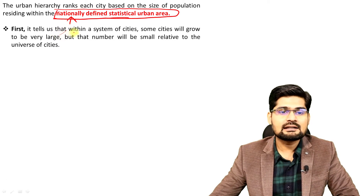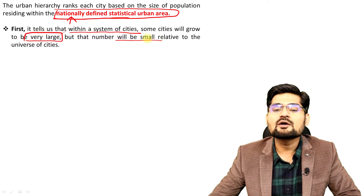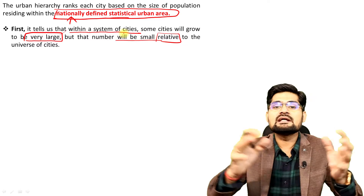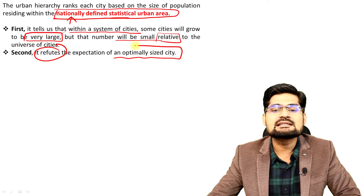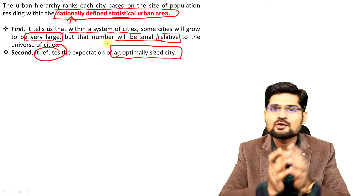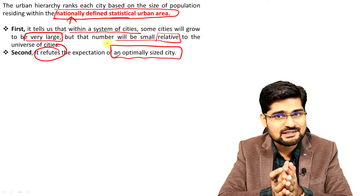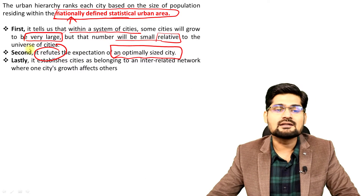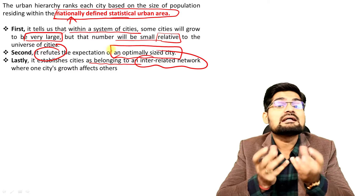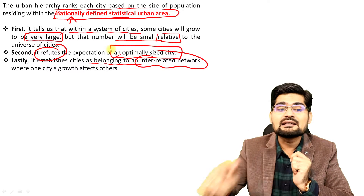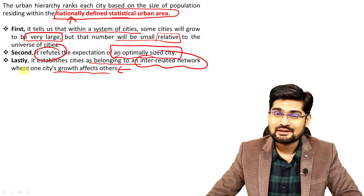Urban hierarchy is important for three reasons. First, within a system of cities, some will grow to become very large while others remain relatively smaller. Second, it refutes the expectation of an optimally sized city — you cannot determine a fixed optimum because cities take their own course. Third, it establishes cities as belonging to an interrelated network, meaning cities do not grow in isolation; their growth affects each other.